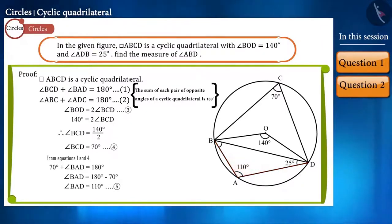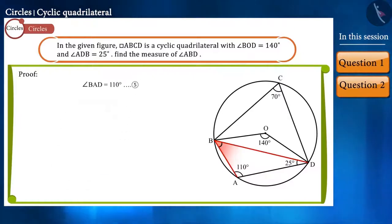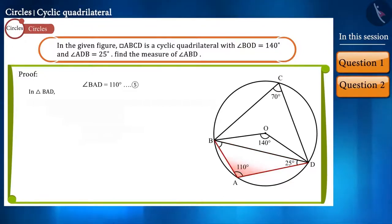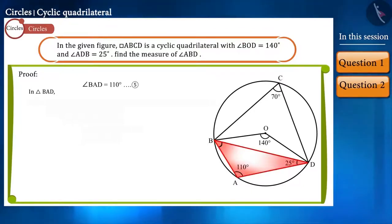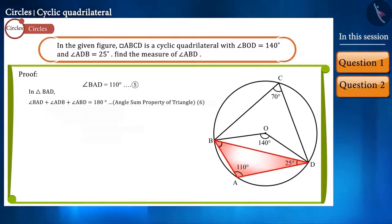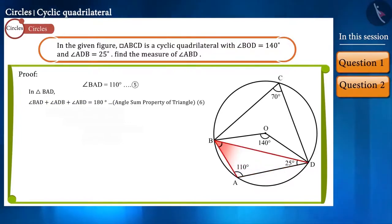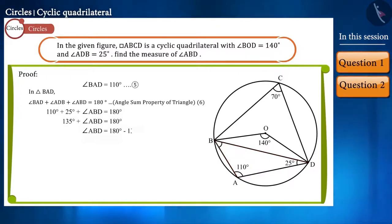According to the question, we have to find the value of angle ABD. Friends, look at triangle BAD. In this, we are given the measurement of angle ADB and we have found angle BAD. We know that the sum of the three angles of a triangle is 180 degrees. So, by substituting the values of angle ADB and angle BAD into this equation, we can find the value of angle ABD. We get angle ABD measuring 45 degrees.